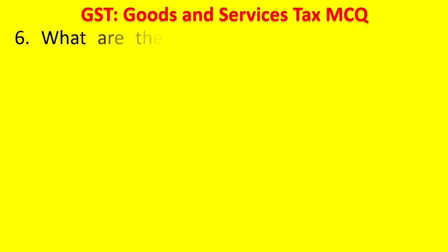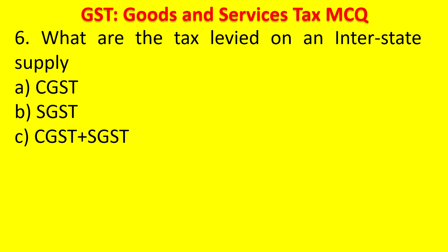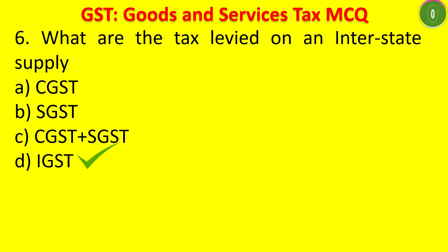Question 6: What tax is levied on interstate supply? Options: CGST, SGST, CGST plus SGST, IGST. The answer is IGST. For a transaction between two different states, or one state to a union territory, or union territory to another union territory, IGST is imposed.